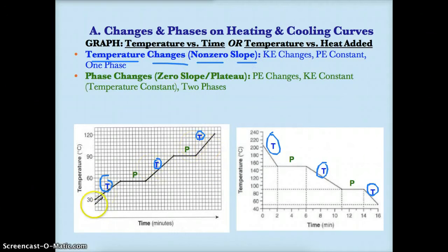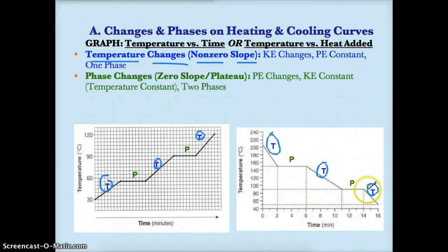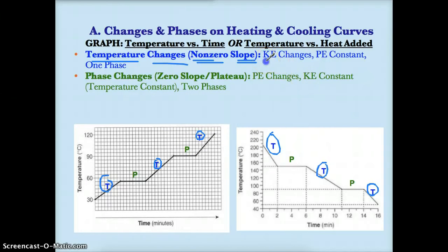In the case of these three, the slope is positive because it's pointing upwards. On the other hand, here you have non-zero slopes — specifically negative slopes since they're sloping downward, just like a ski slope. So you have six slopes where they're non-zero, meaning either positive or negative. Temperature changes relate to non-zero slopes, and during these temperature changes — the blue T areas with non-zero slope — kinetic energy will change, because kinetic energy is related to temperature.